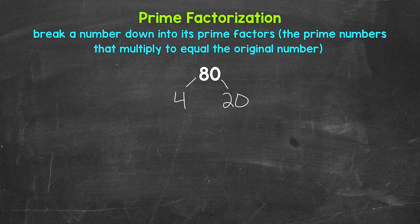Now keep in mind, there are other factors that we could have started with here. For example, 2 and 40, and there are other options as well. These will all work. Depending on the number, there can be multiple different factors that we can use, so there can be multiple ways we can do these. But in the end, we will get to the same prime numbers, and that's what's important.